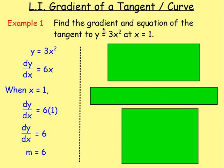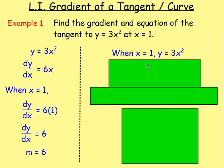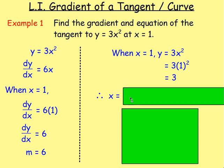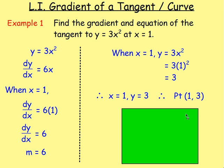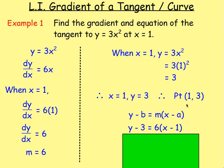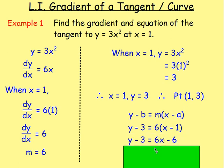We're also asked to work out the equation of the tangent. For the gradient point equation, we know the gradient but only the x value of the point, so we need to work out y. When x equals 1, y equals 3 times 1 squared, which gives us 3. So the point is (1, 3). With gradient 6 and point (1, 3), we put it into y minus b equals m bracket x minus a. That gives y minus 3 equals 6 bracket x minus 1. Multiplying out: y minus 3 equals 6x minus 6, so y equals 6x minus 3.